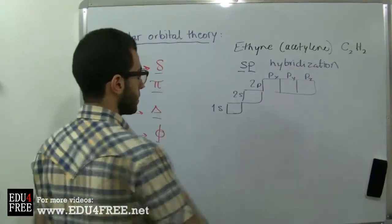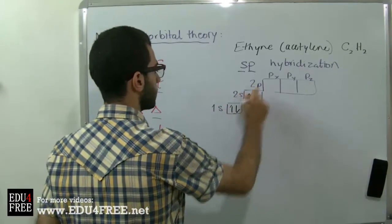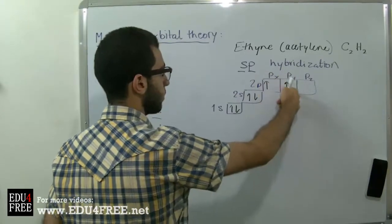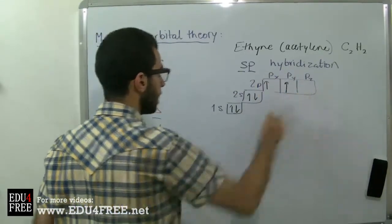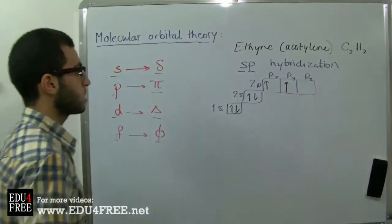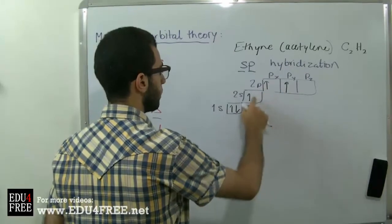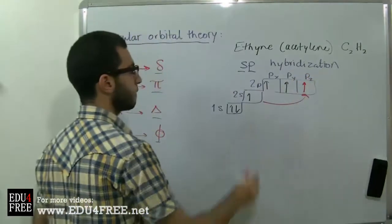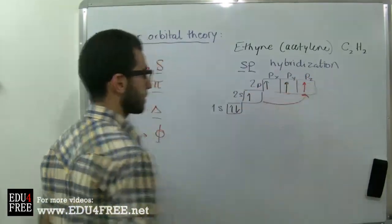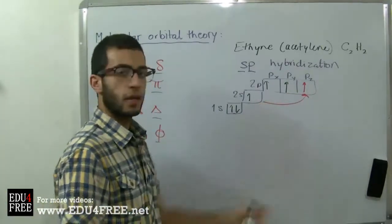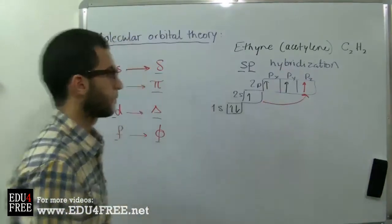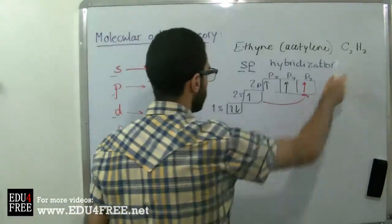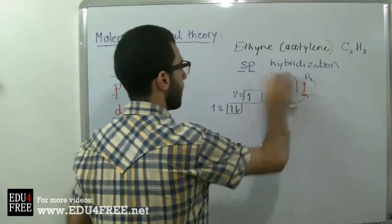Carbon contains six electrons, distributed as: two electrons in 1s, two electrons in 2s, one in Px and one in Py, and Pz is vacant or empty. The first step in hybridization, as mentioned in the previous video, is that one electron jumps from the 2s to the Pz. Now we have four semi-vacant orbitals, and carbon is ready to make bonds with hydrogen and carbon. As each carbon atom needs just one hydrogen atom, here is the shape after the hybridization.